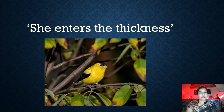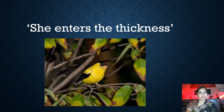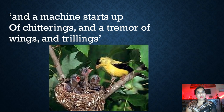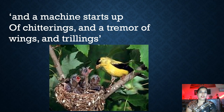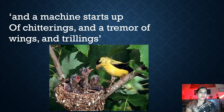She enters the thickness of the tree — from the branch end the bird goes inside the leaves, where her nest is. And a machine starts up of chitterings and tremor of wings and trillings, because she has brought some food for her young ones. The young ones are very excited to see their mother, so they are making a lot of noise — a lot of chittering and chirping in the air — and they are shaking their wings in excitement.